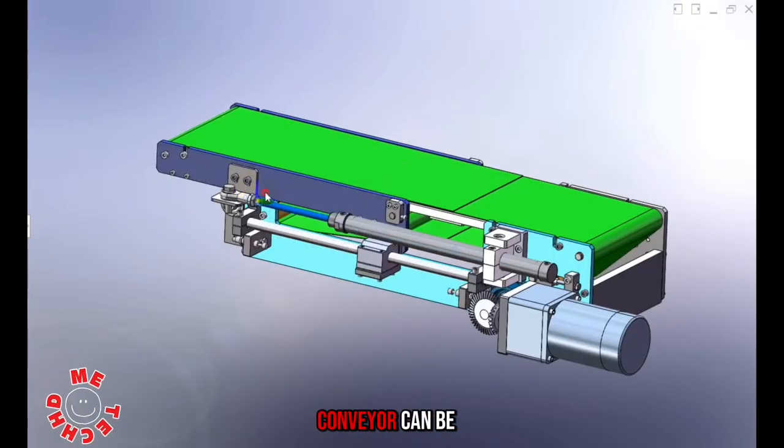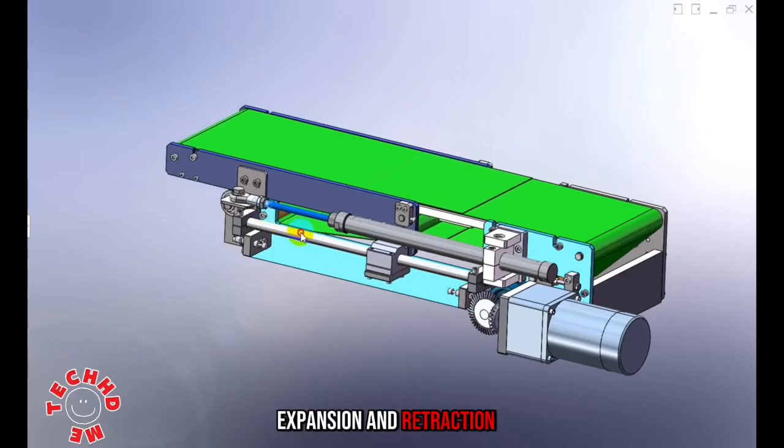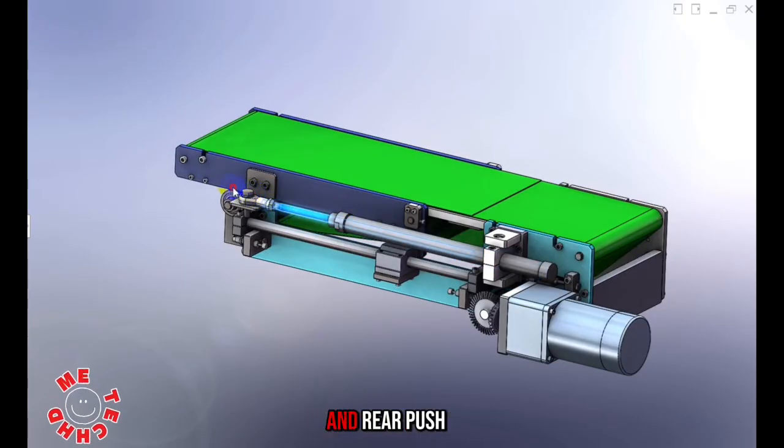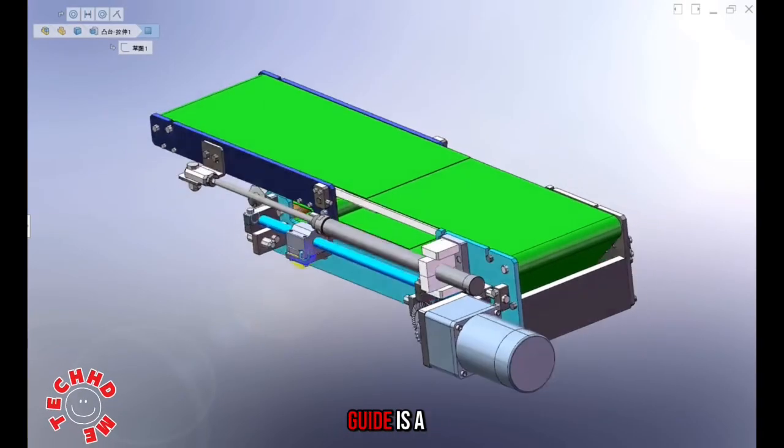This is a design of a retractable belt conveyor that can expand and retract. The method uses a gas cylinder to realize front and rear push. The side guide uses linear bearings on both sides.